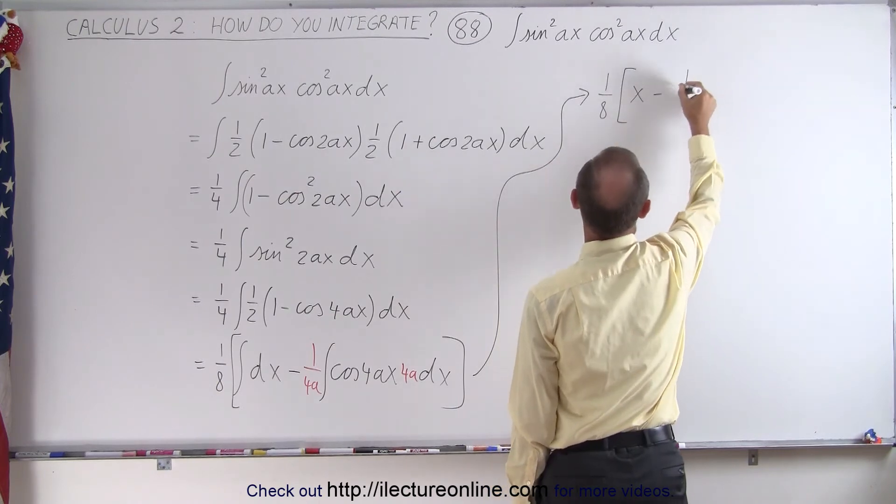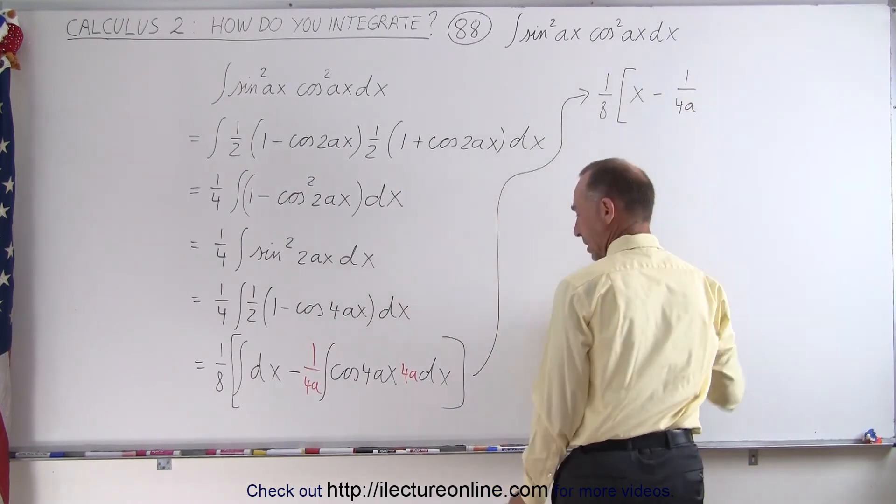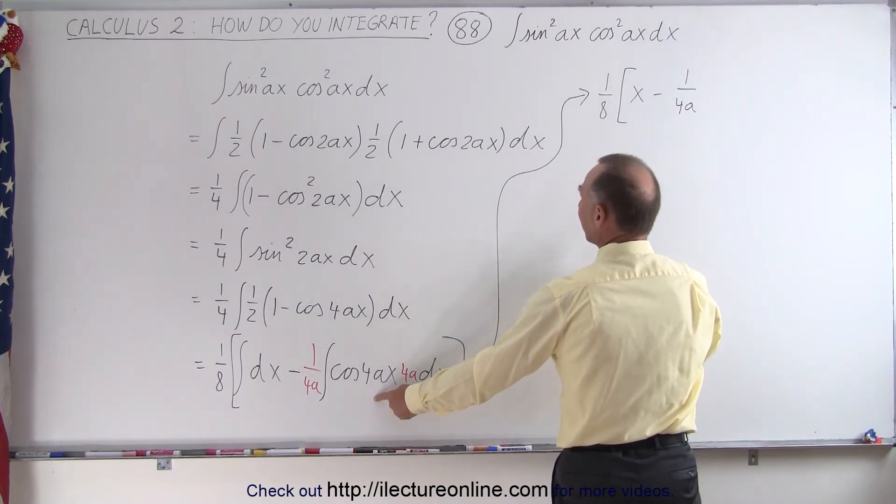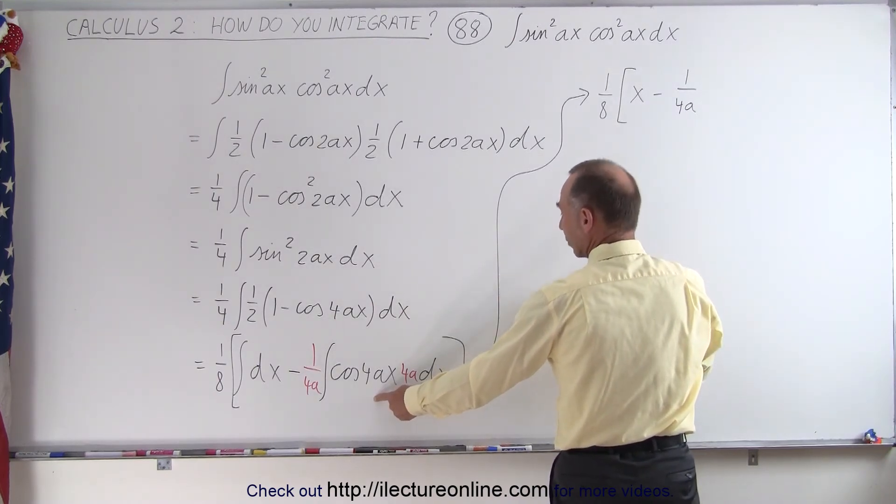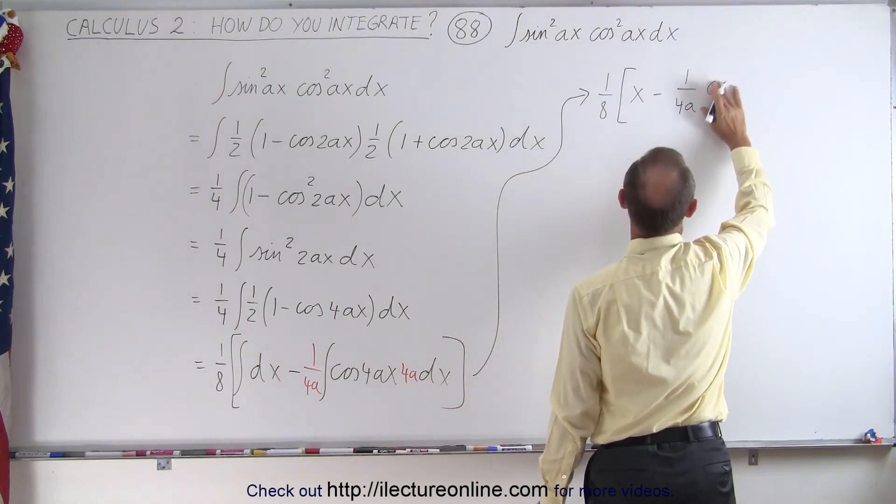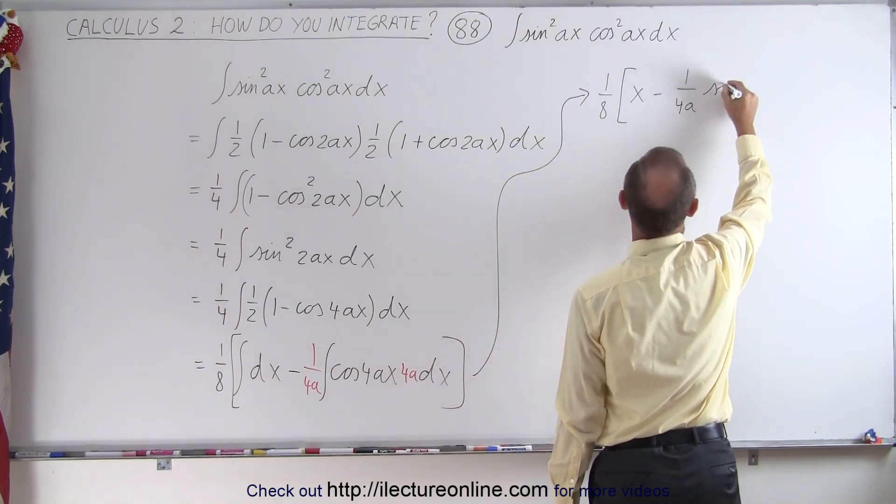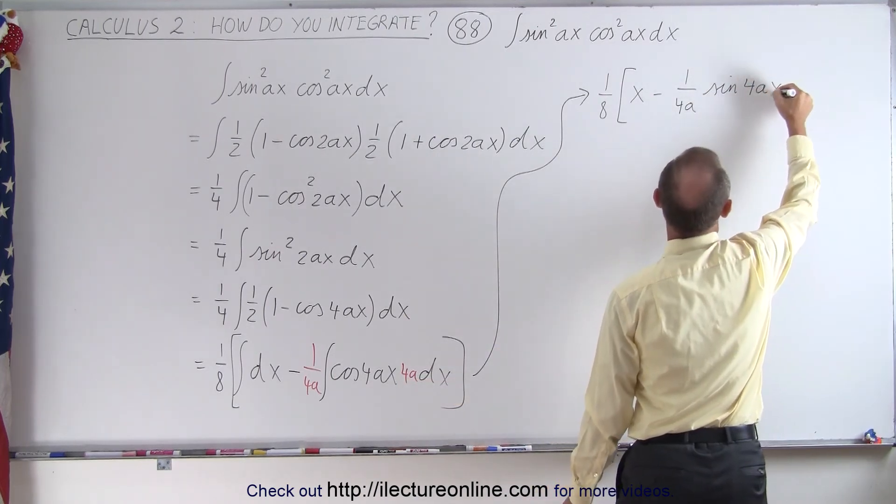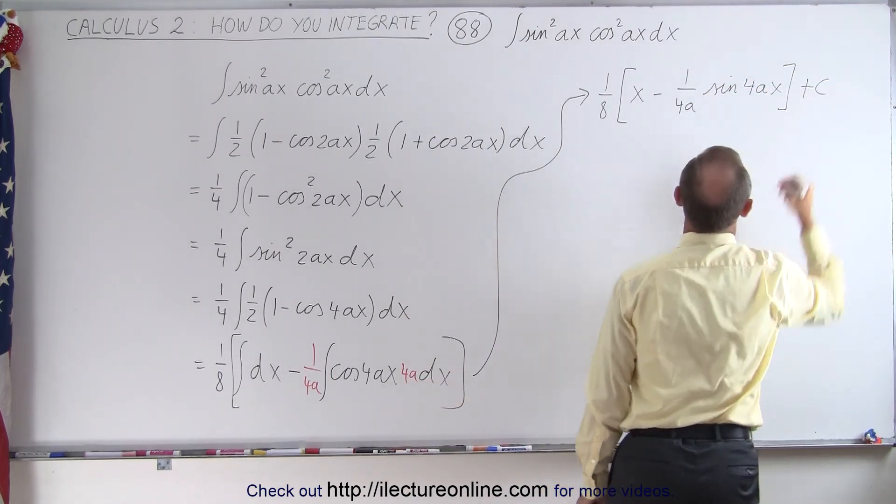And then minus 1 over 4A times the integral of the cosine. Let's see, the derivative of sine is cosine, so the integral of cosine is the positive sine, so this will be the positive sine of 4Ax, and we have a constant of integration.